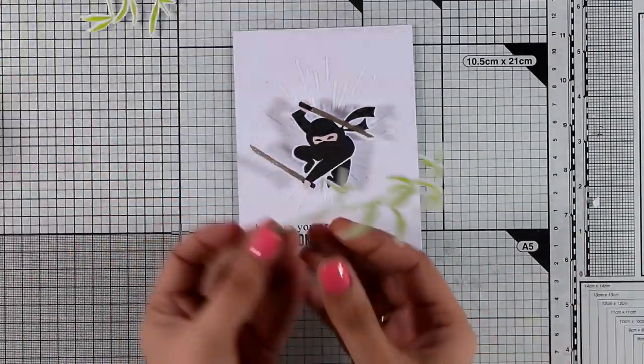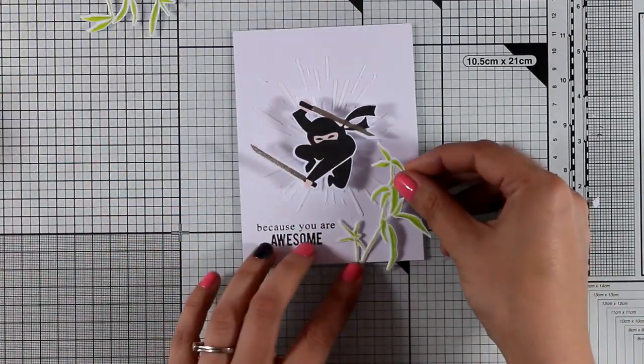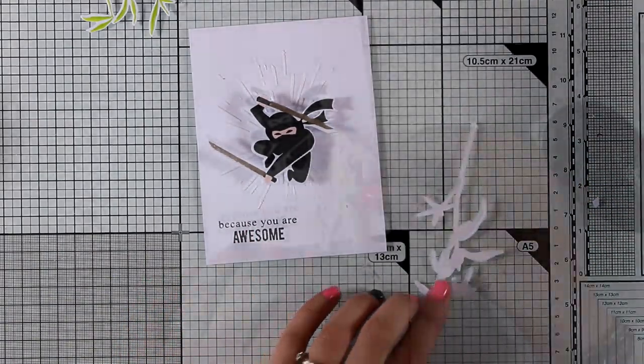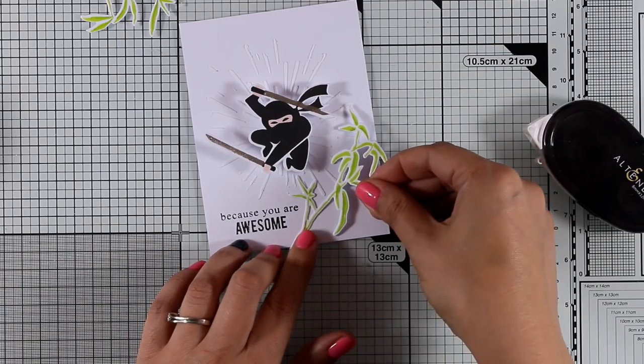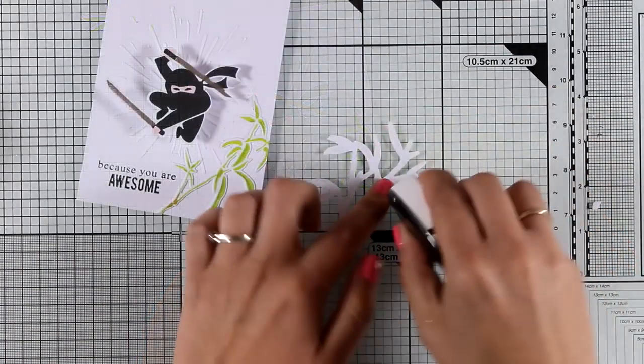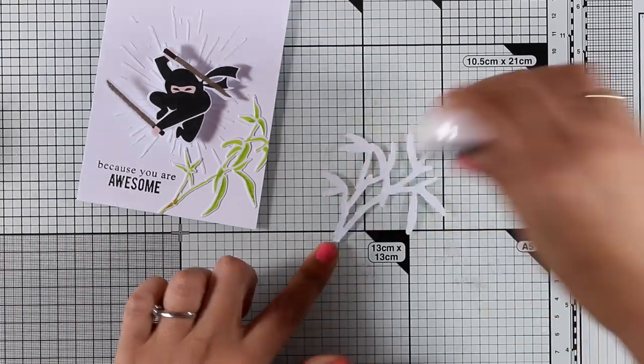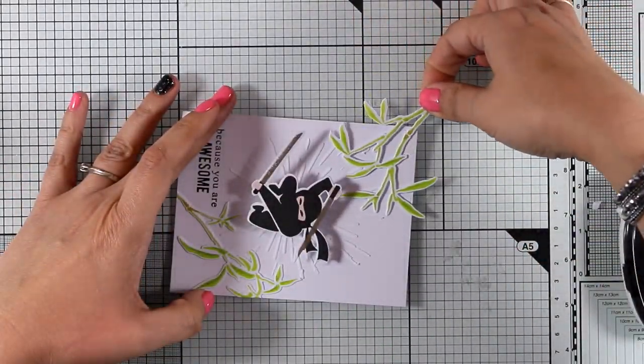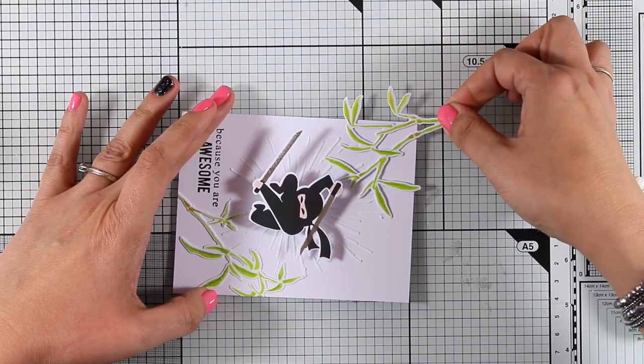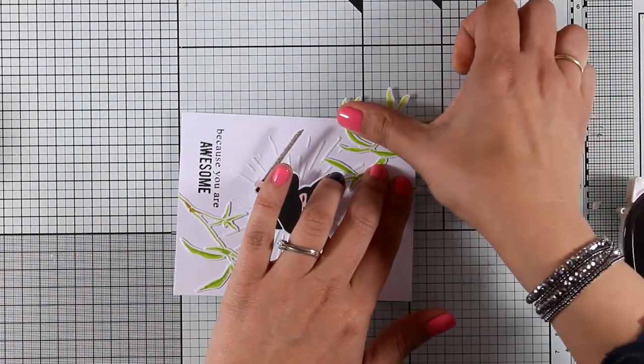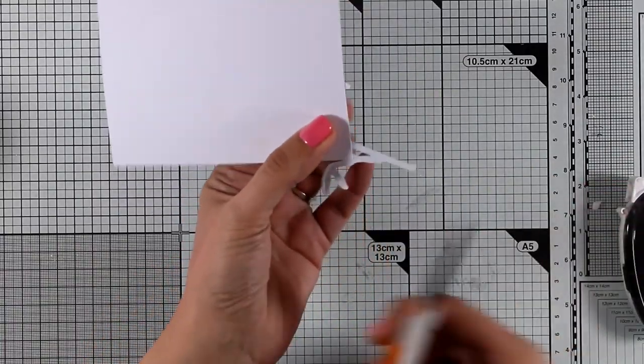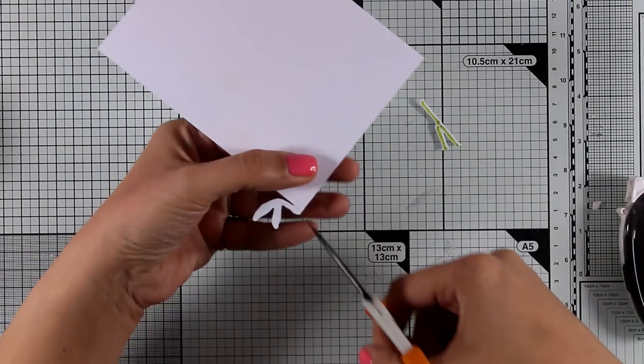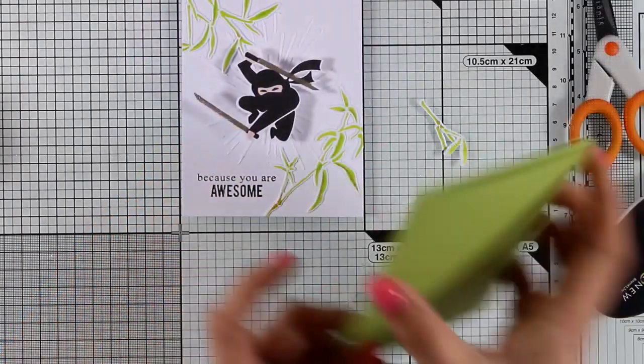And the card is already looking awesome as it is, but I will embellish it a little bit more with those bamboo trees. I'm just trying to decide where everything is going to go, and then I will add some tape adhesive at the back and stick them down. So the idea here is that this ninja is flying and is coming towards you, and I'm going to stick those bamboos in two opposite corners which frame my ninja quite nicely.